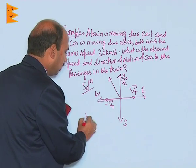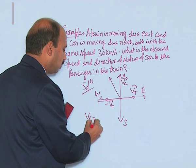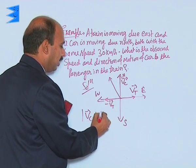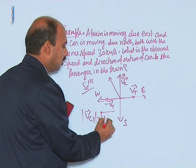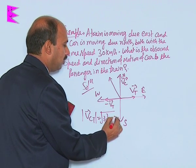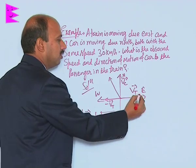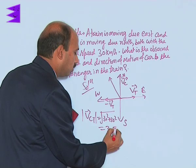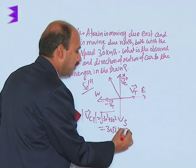That resultant velocity, the velocity of car with respect to train - you will be getting its magnitude as the square root of 30 squared plus 30 squared, because this is also 30, this is also 30. So that will be 30 root 2 kilometers per hour.